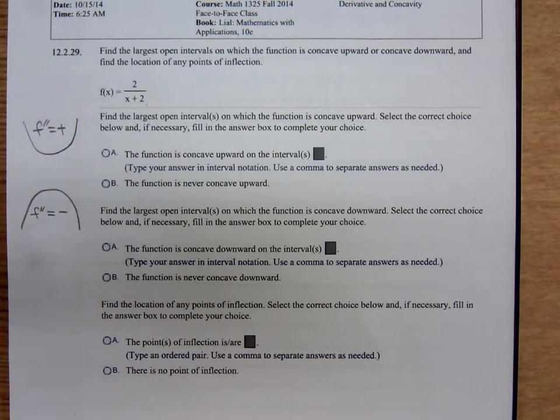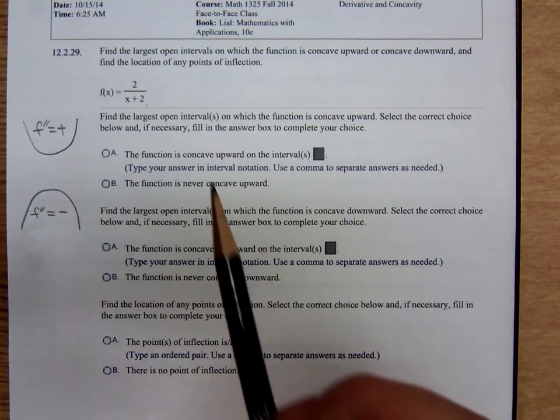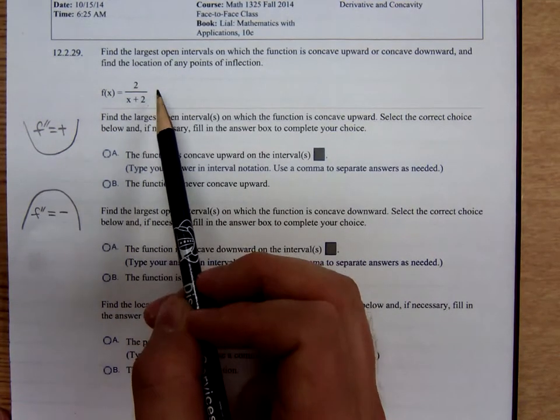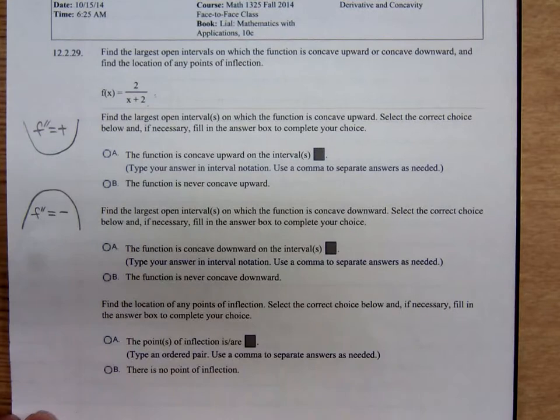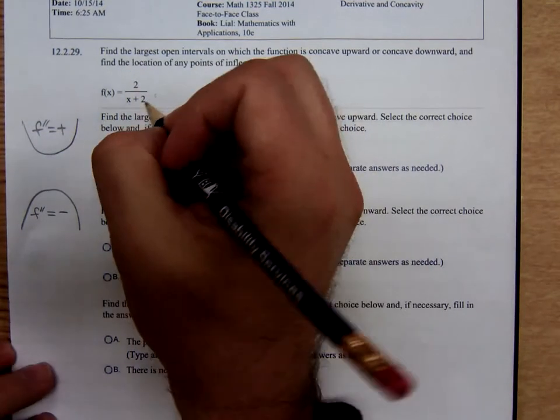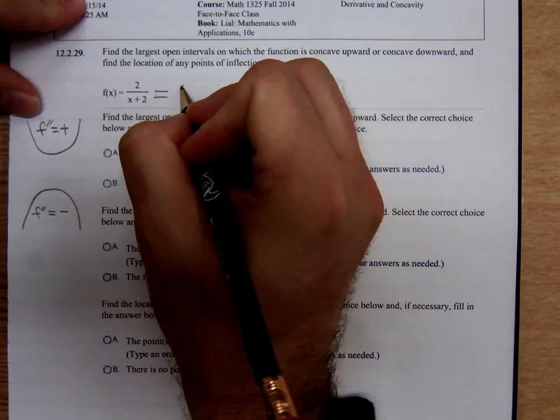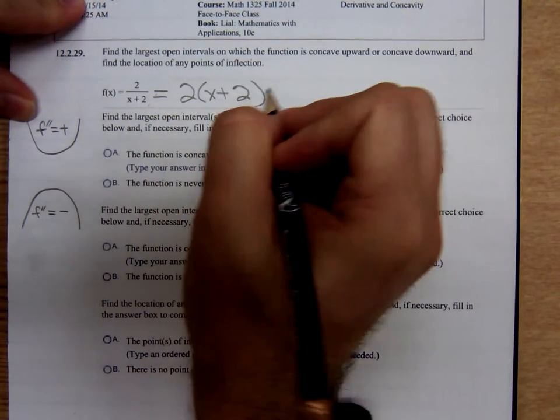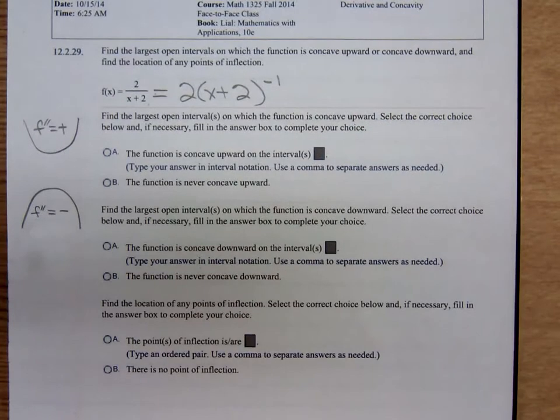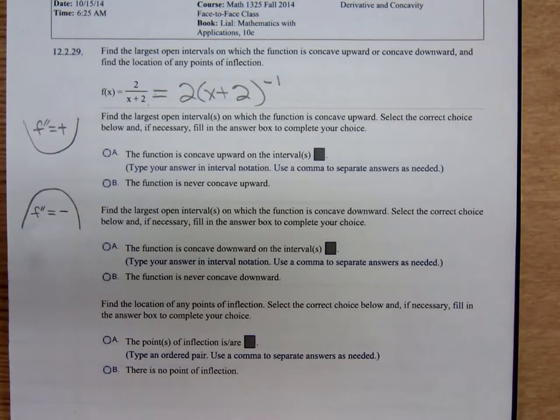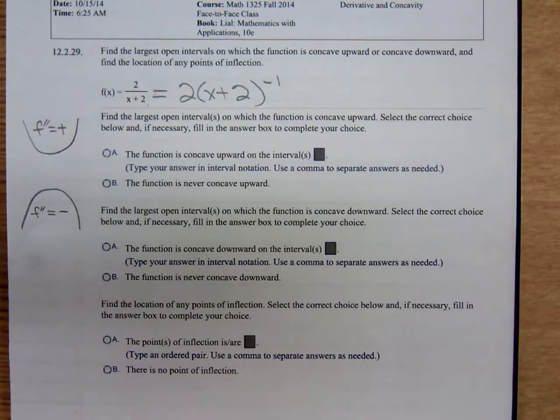In order to do that we have to find f prime and I would recommend that you use the quotient rule here. What I would do, I would rewrite the function as 2 times x plus 2 to the negative 1 power. I would rewrite the function itself using negative exponents and that's what I would differentiate.